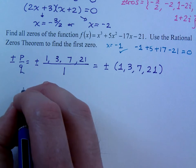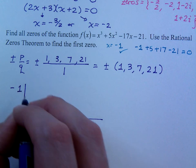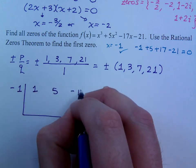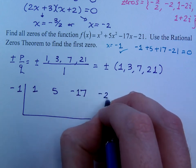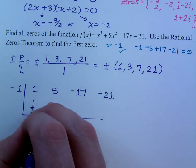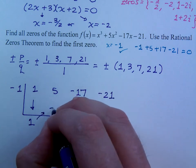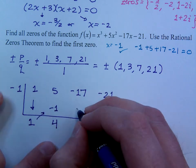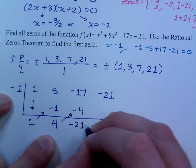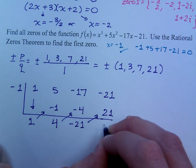So, when I do synthetic division, I'm going to use negative 1 for my k value. My coefficients are 1, 5, negative 17, and negative 21. Now, I said that it's supposed to equal 0, so let's see if that's true. So, that's a 1. Multiply, I get negative 1. Add is 4. Multiply to get negative 4. Add is negative 21. Multiply again, I get 21. And there's my remainder of 0.